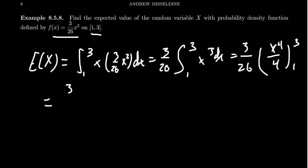We get x to the 4th over 4 as we go from 1 to 3. So we get 3 over 104 times by 3 to the 4th, which is 81, minus 1 to the 4th which is 1. That's 80, so we get 3 times 80 over 104.